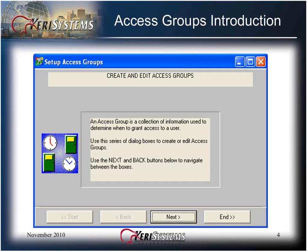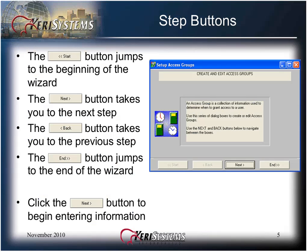Access groups are created and edited using a wizard, a series of windows that take you step-by-step through the creation process. The Start button jumps to the beginning of the wizard. The Next button takes you to the next step. The Back button takes you to the previous step, and the End button jumps you to the end of the wizard. Click the Next button to begin entering information to create your access group.